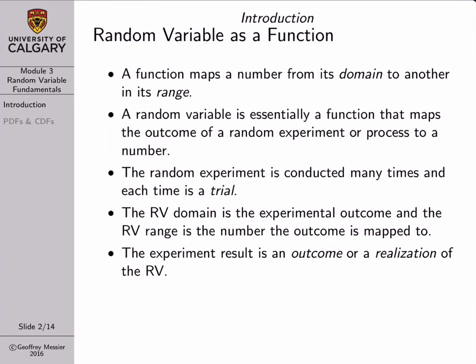Most of you, if you have an engineering undergraduate background, will have taken at least one course on probability and statistics, so probably you have been exposed to the idea of a random variable. However, I still find it's useful to go right back to fundamentals and start by talking about what a random variable is, because random variables have very special meanings, especially for engineers. We're not mathematicians, we're engineers, and the fact that we need to bridge the physical world into the mathematical world means that we need to look at random variables in a certain way.